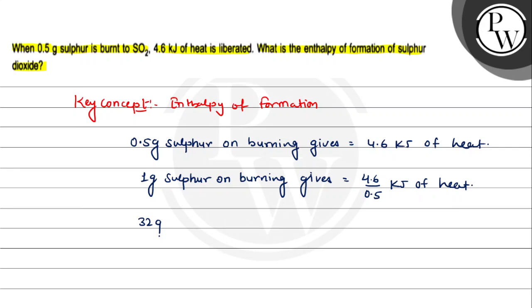So 32 gram sulfur on burning gives 4.6 divided by 0.5 multiplied by 32. You can also convert to one mole and calculate. This equals 294.4 kJ.